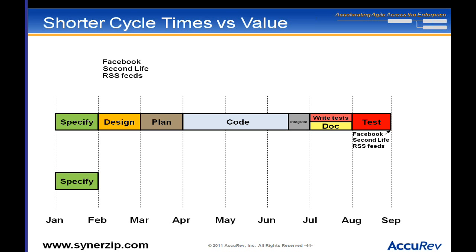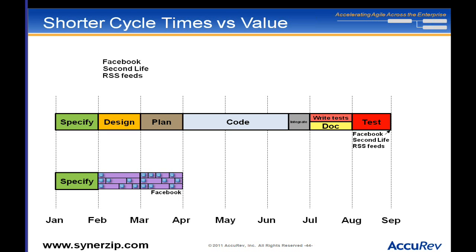Lastly, before I wrap up, let's talk about reducing cycle times, which is another way to recoup value. I have a traditional project at the top, and I'm doing an agile project with short iterations. I've got three things to do: Facebook integration, Second Life integration, and RSS feed integration. I do some stories focused on Facebook — I don't have it all yet but I have a piece of it, and I could ship this if I want to. To finish that integration I do another iteration of work.